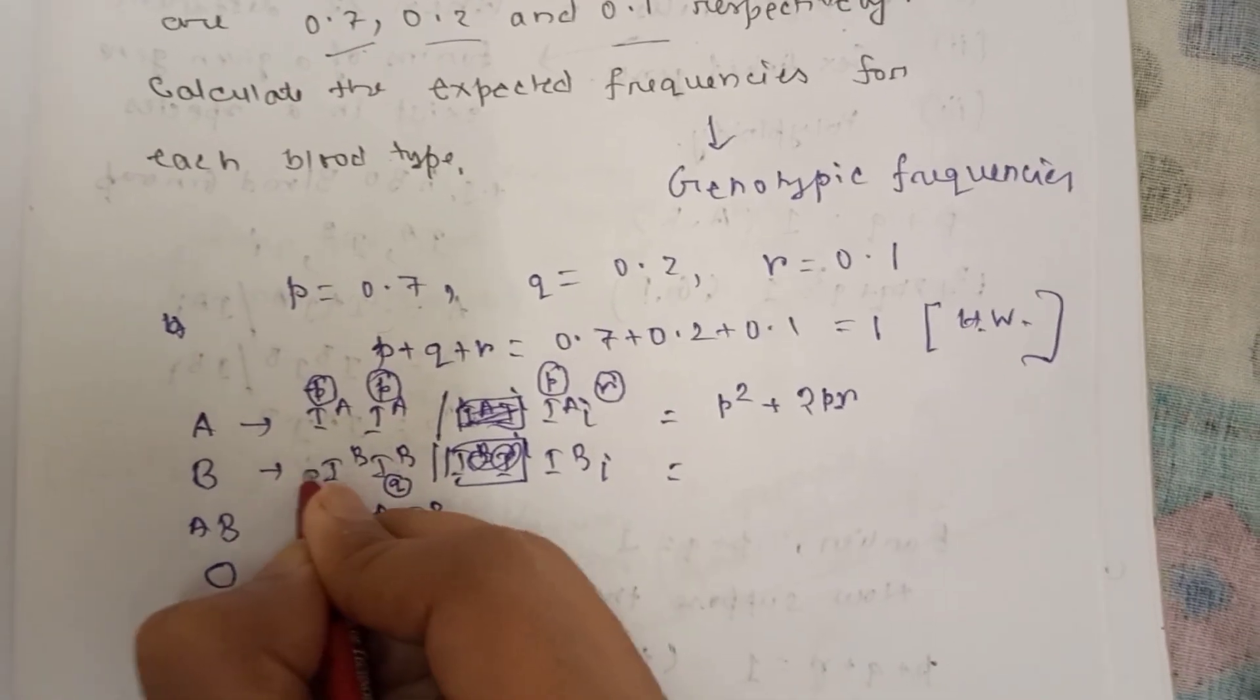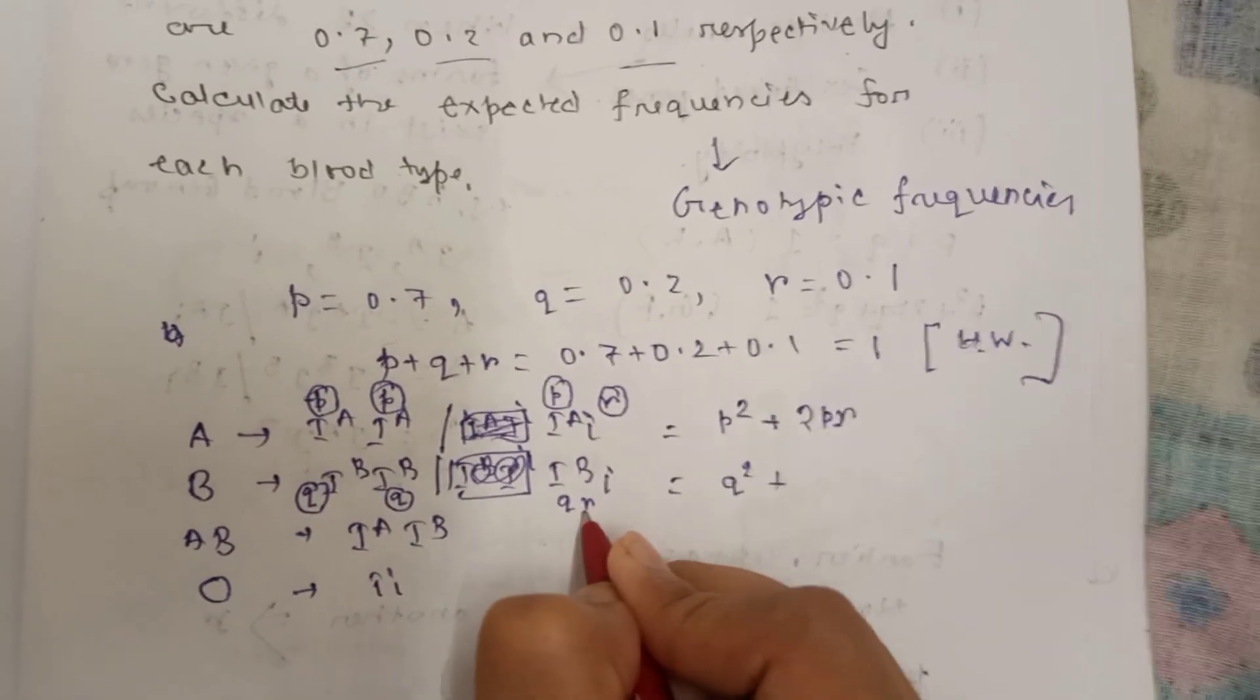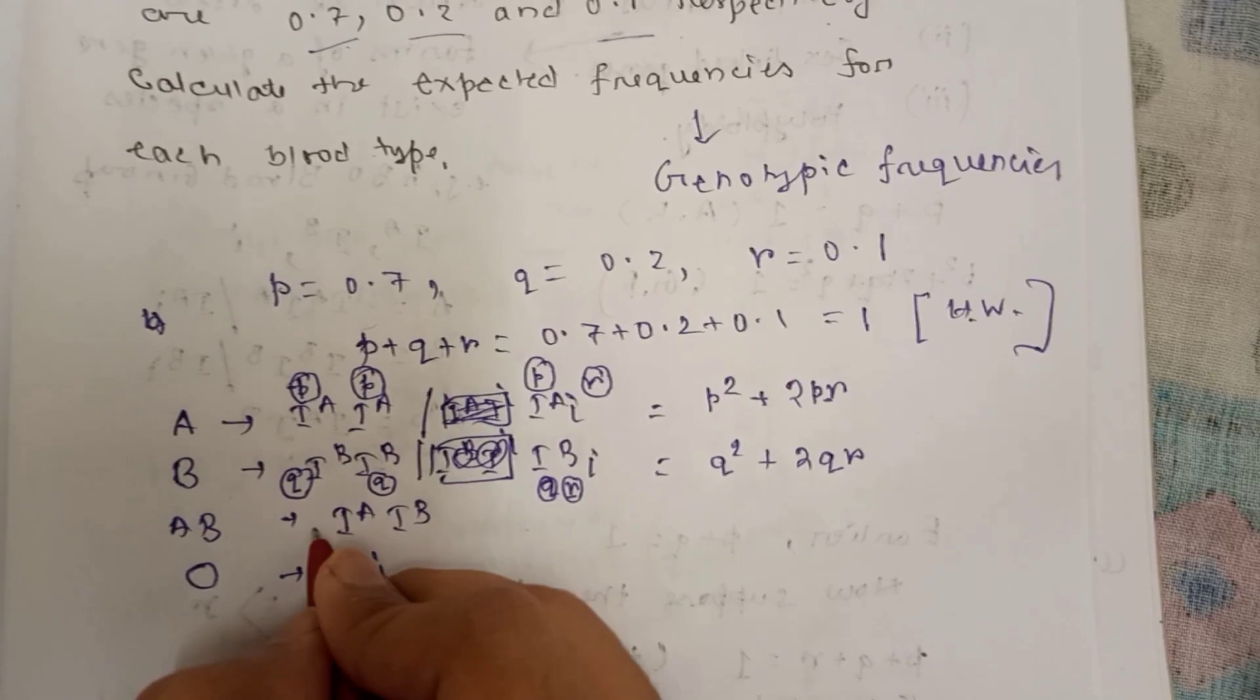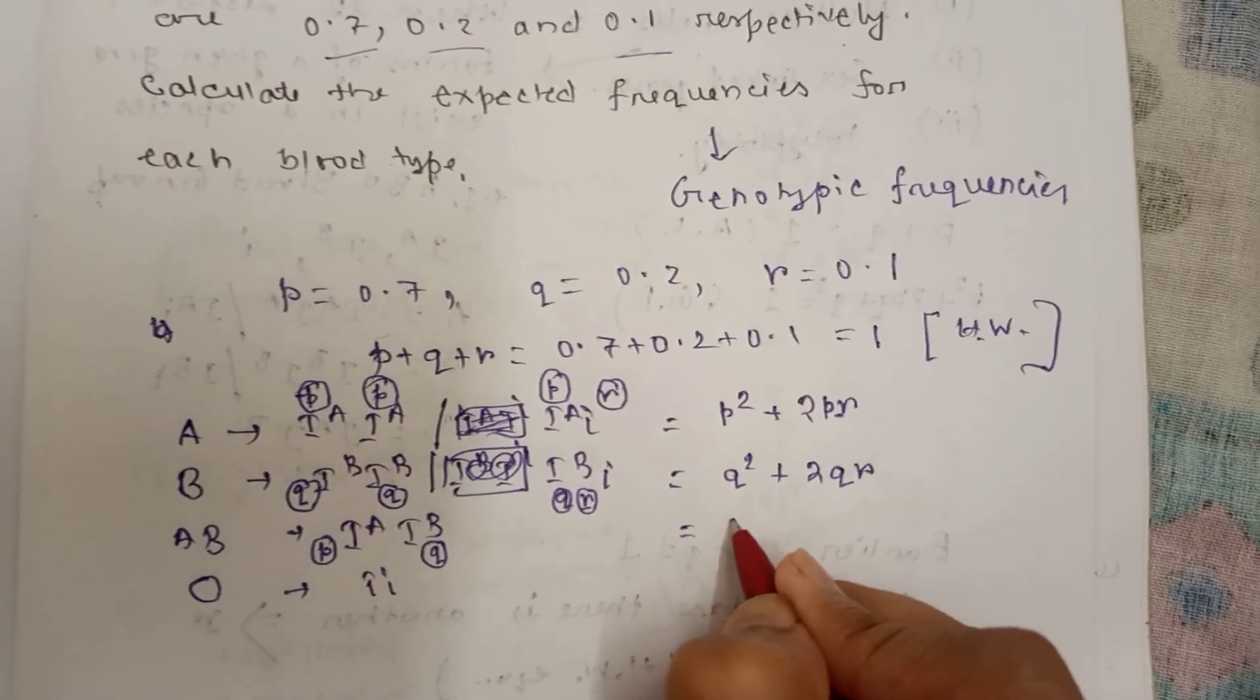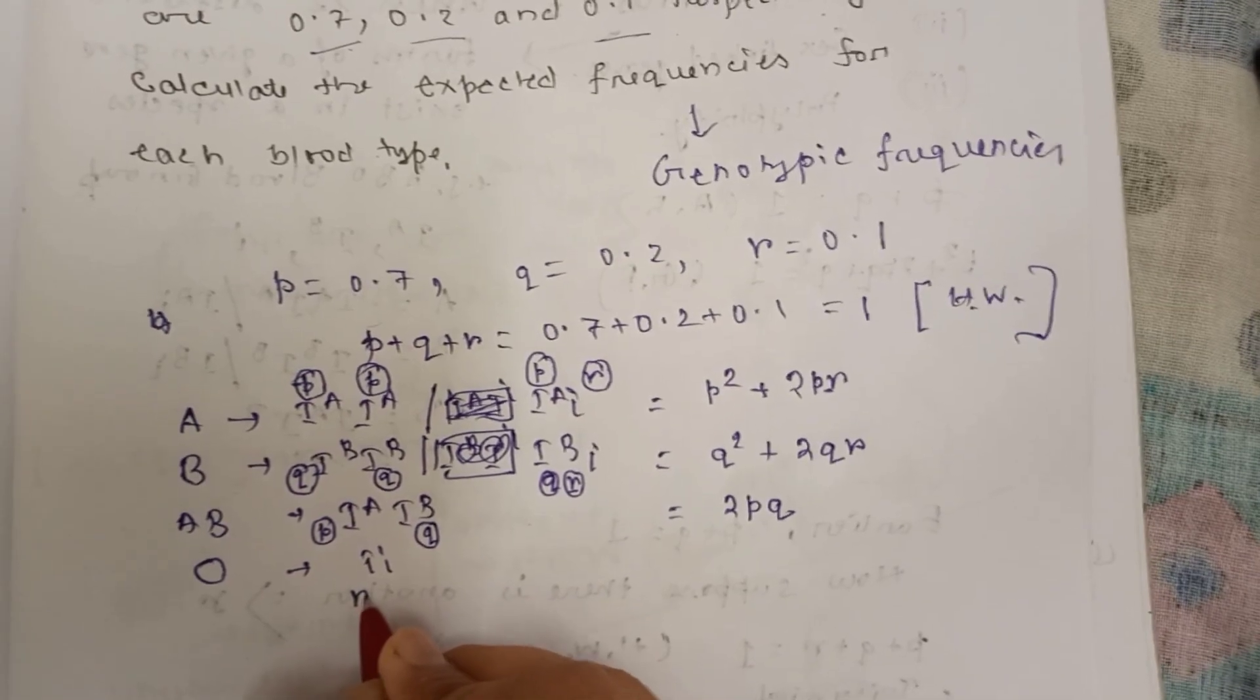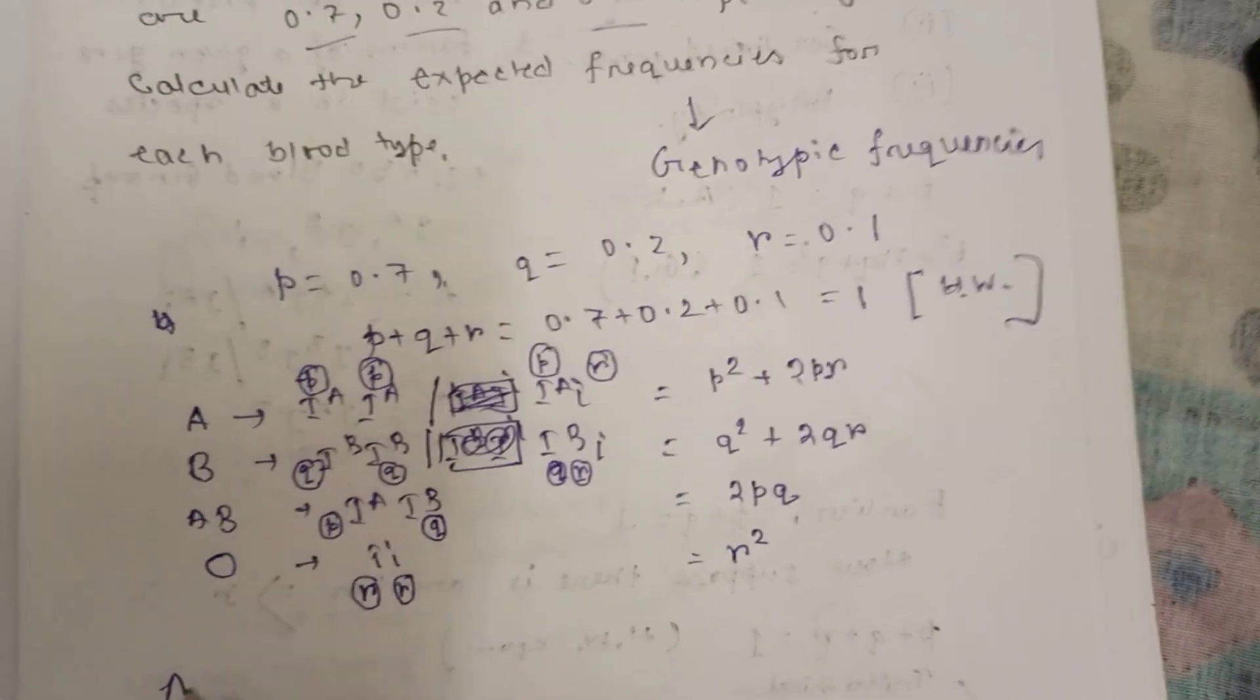I^B is q and i is r, so again 2qr. Now I^A is p for the AB and I^B is q, so again it is heterozygous so it will be 2pq. And this is r and r, so it will be r square.